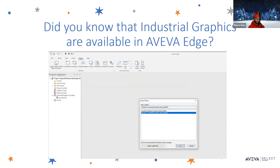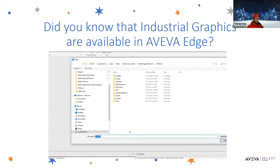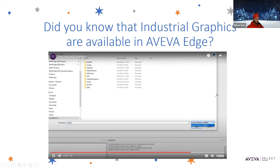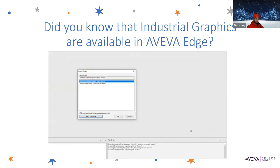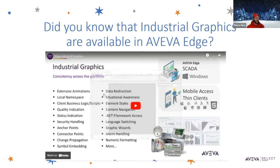Here we have two different libraries that are installed when we install VIVA Edge 2020: the industrial graphics library as well as the situational awareness graphics library. But you also have the ability to bring in a custom file — that will be an .aapkg file. If you export that from InTouch, System Platform, or other products within the AVEVA portfolio, you'll be able to bring those in. So the same industrial graphics available in InTouch and System Platform are available in Edge as well.